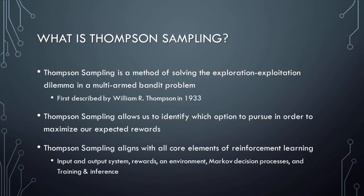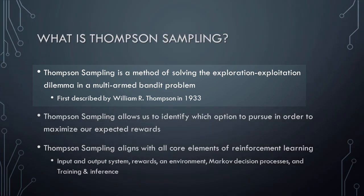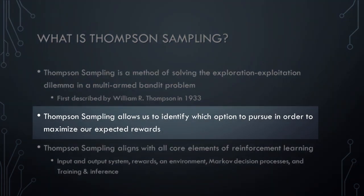So what is Thompson Sampling? Thompson Sampling is a method of solving the exploration-exploitation dilemma in a multi-armed bandit problem. The method is named for William R. Thompson, who first described it in 1933. Since then, Thompson Sampling has been studied in literally thousands of scientific papers, and this should give you some idea of its value. Thompson Sampling is great because it provides us with a useful way of identifying which option to pursue in a multi-armed bandit problem in order to maximize our expected rewards. It does this by providing a framework for finding an optimal balance between learning more about the available options through exploration and accumulating rewards by exploiting what we have already learned.